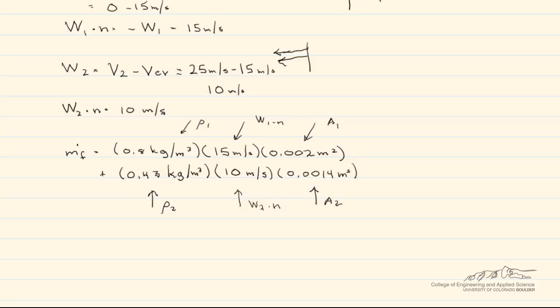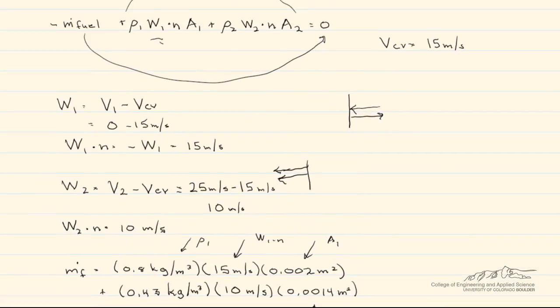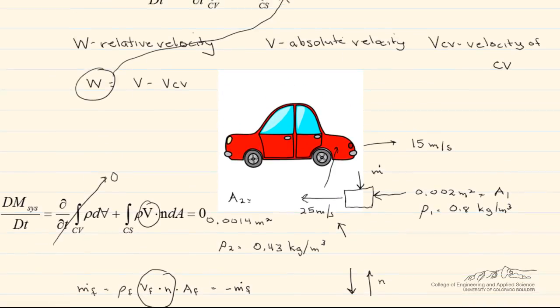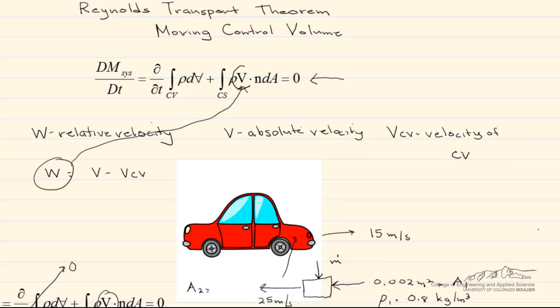Plugging our values into the equation — rho 1 times w1 dot n times area 1, plus rho 2 times w2 dot n times area 2 — and adding them together gives us the mass flow rate of the fuel, which equals 0.03 kilograms per second. A moving control volume is analyzed exactly the same way as a fixed control volume; the only difference is that we replace v with w, the relative velocity.